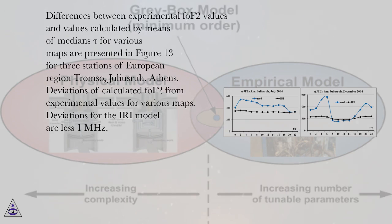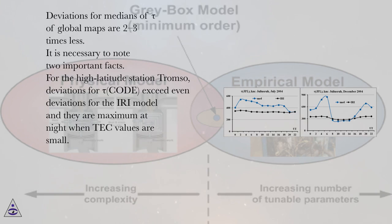Differences between experimental FOF2 values and values calculated by means of medians tau for various maps are presented in figure 13 for three stations of European region: Tromso, Julius Rue, Athens. Deviations of calculated FOF2 from experimental values for various maps. Deviations for the IRI model are less than 1 MHz. Deviations for medians of tau of global maps are 2 to 3 times less. It is necessary to note two important facts.